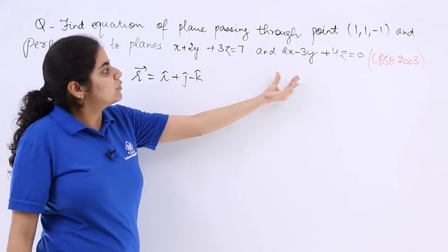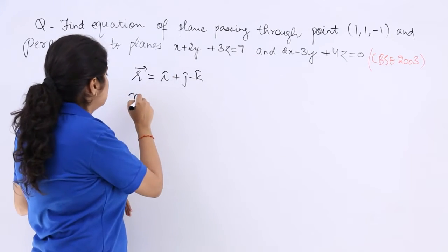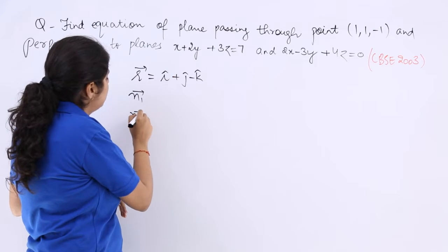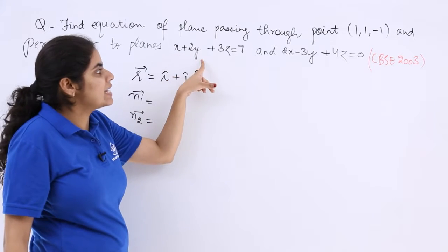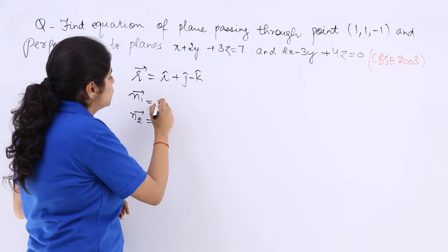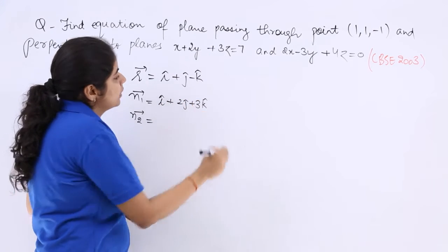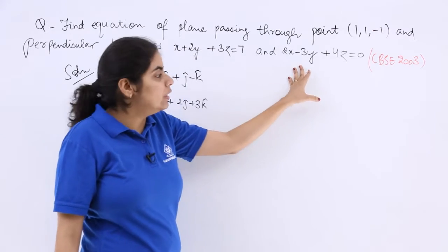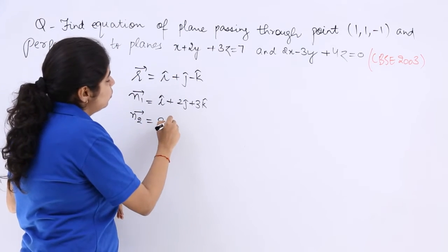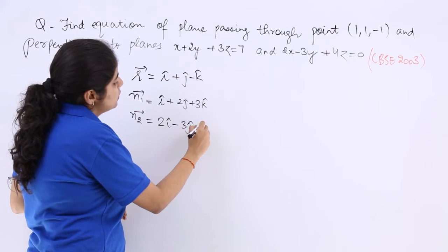This is the first equation, this is the second equation. Now n1 vector and n2 vector should be known. n1 vector has to deal with 1, 2, 3 as the coefficients, so it is i plus 2j plus 3k. n2 vector means the second normal; it is 2i minus 3j plus 4k.